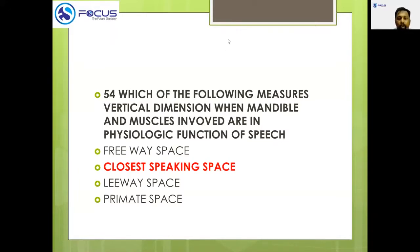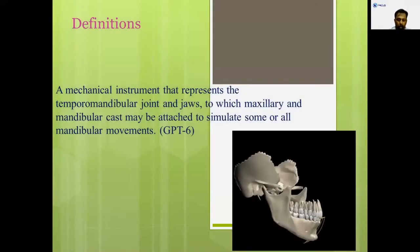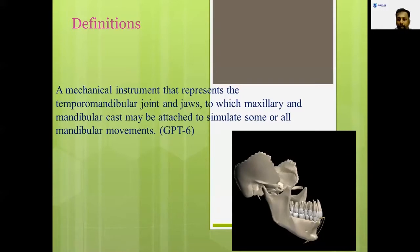We will discuss articulators. Articulators are a mechanical instrument which represent the temporomandibular joint, to which maxillary and mandibular casts can be attached so that we can simulate some or all of the movements. It is a mechanical device to which maxillary and mandibular casts can be attached which can simulate some or all the movements.